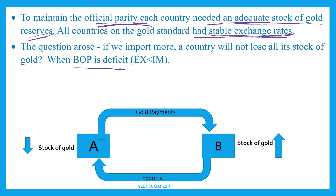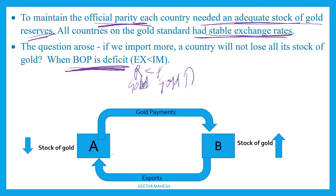There was a question: if a country is experiencing a deficit balance of payments — meaning exports are less and imports are more, receipts are less and payments are more — then gold will flow out of the country. Let us understand this with the help of a flow chart.